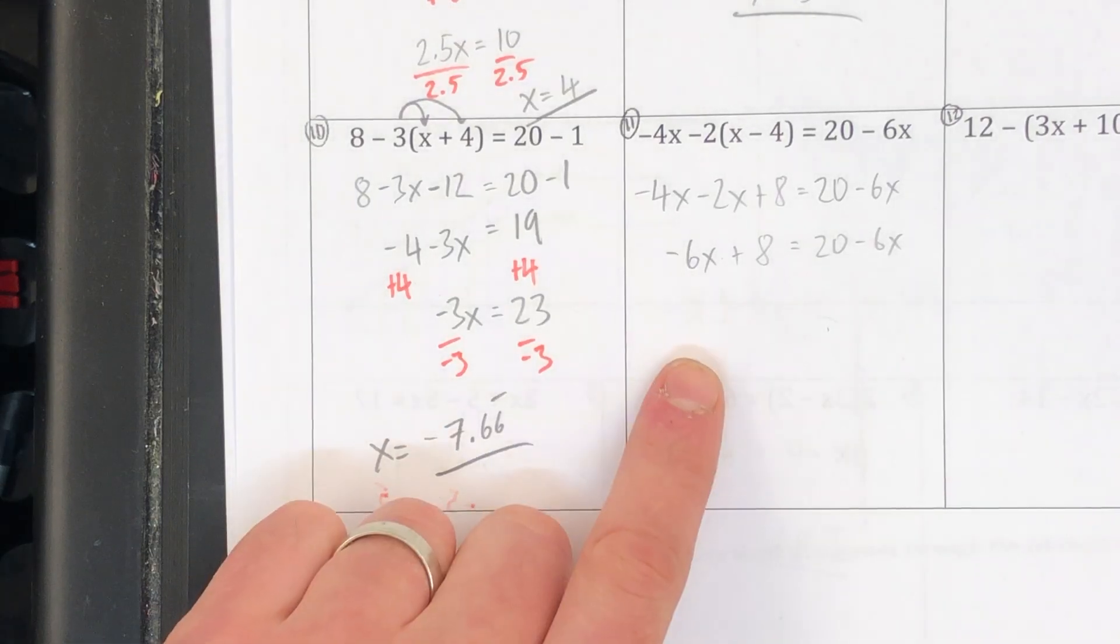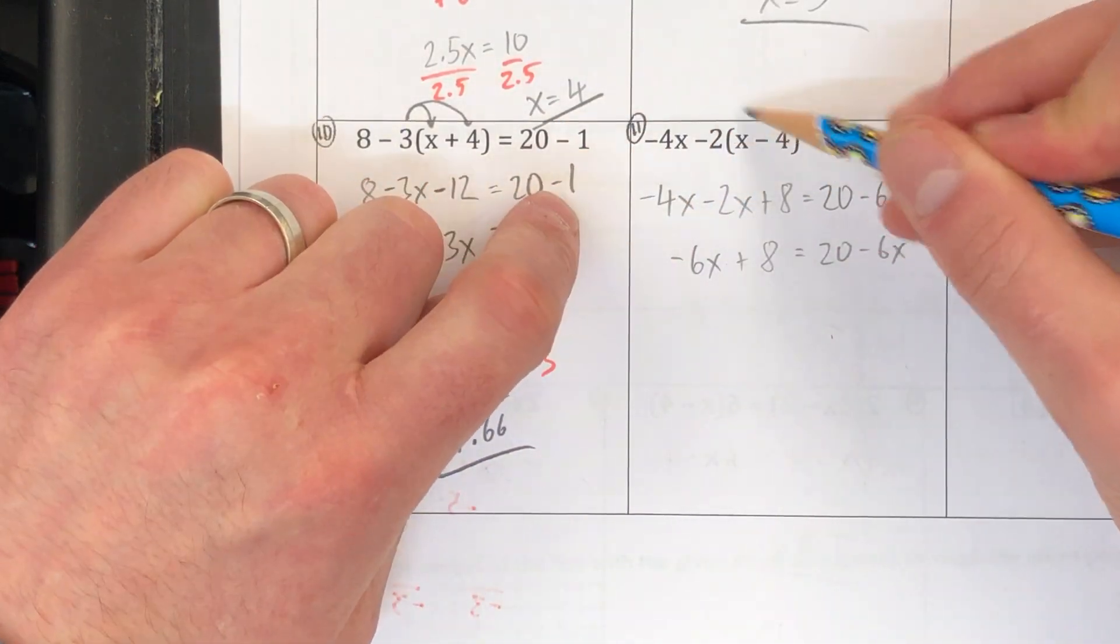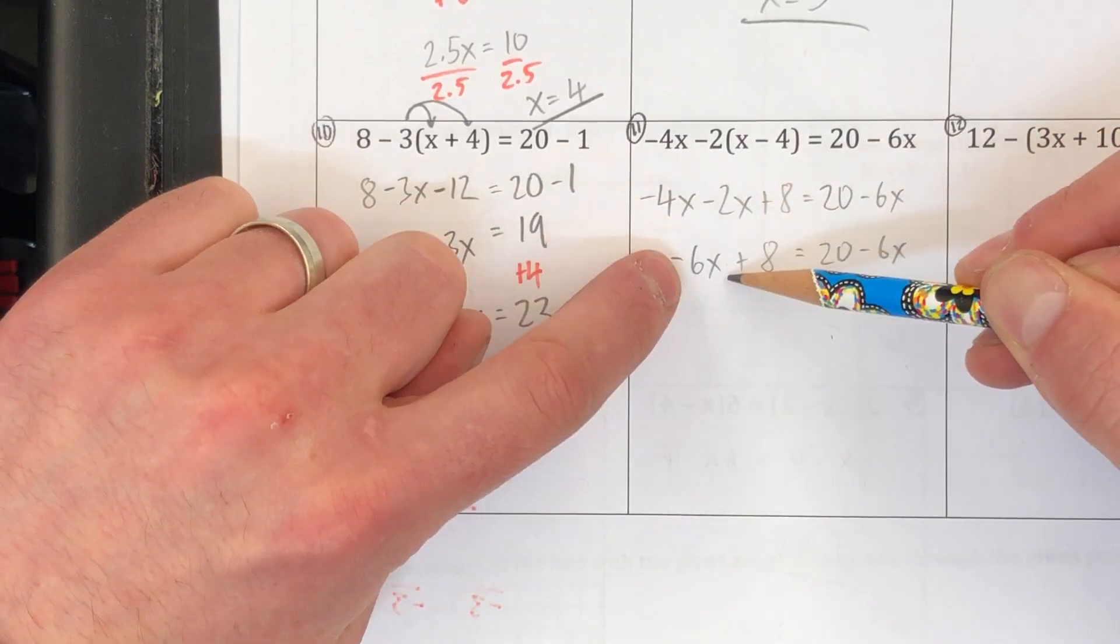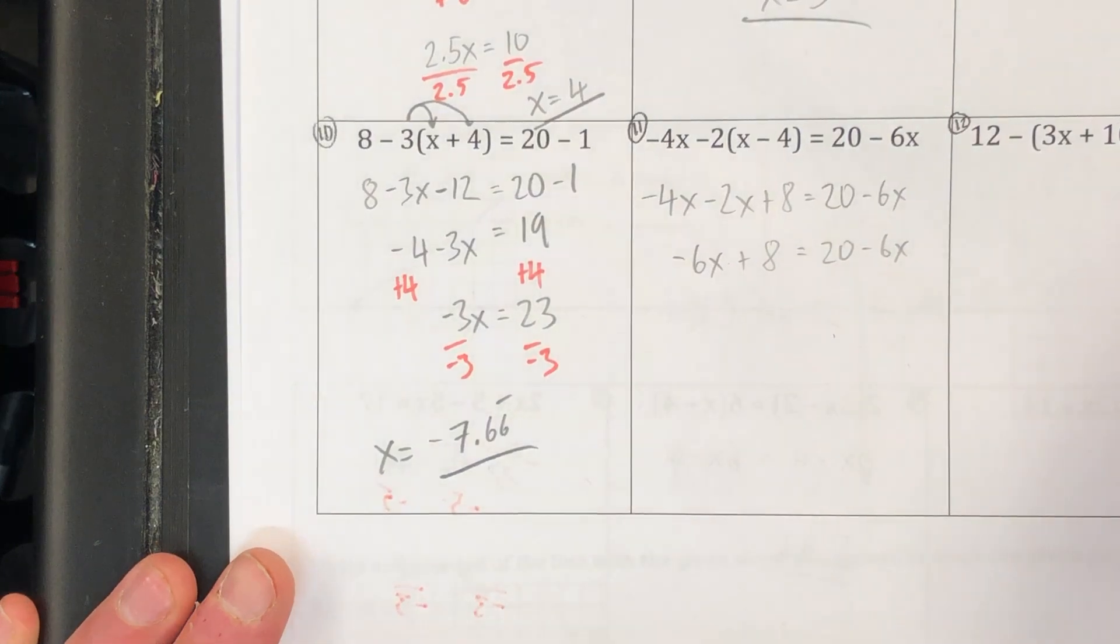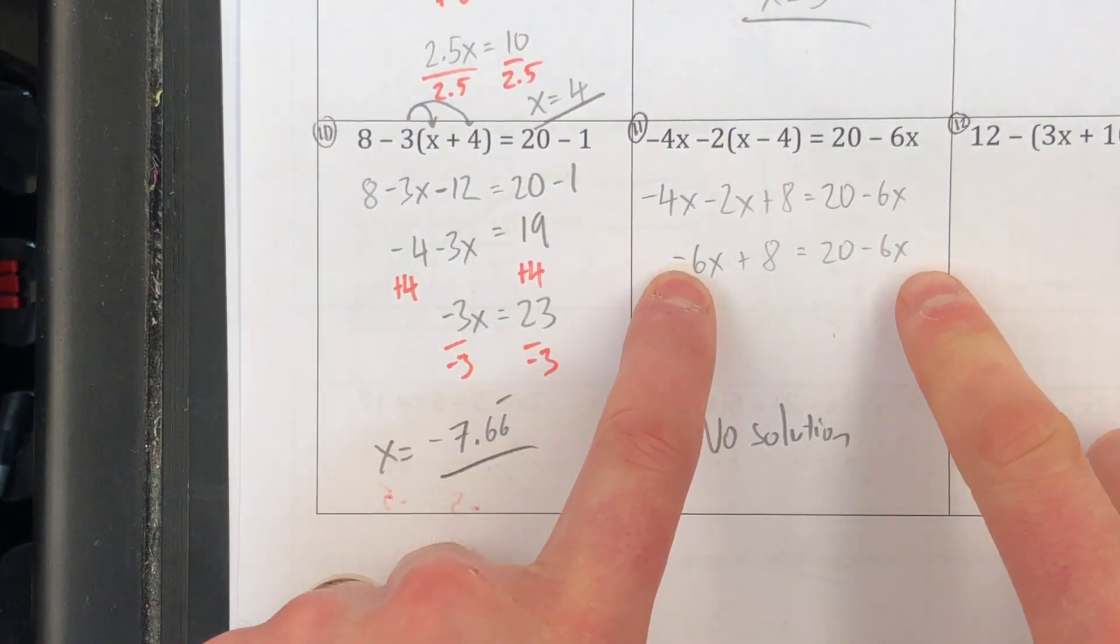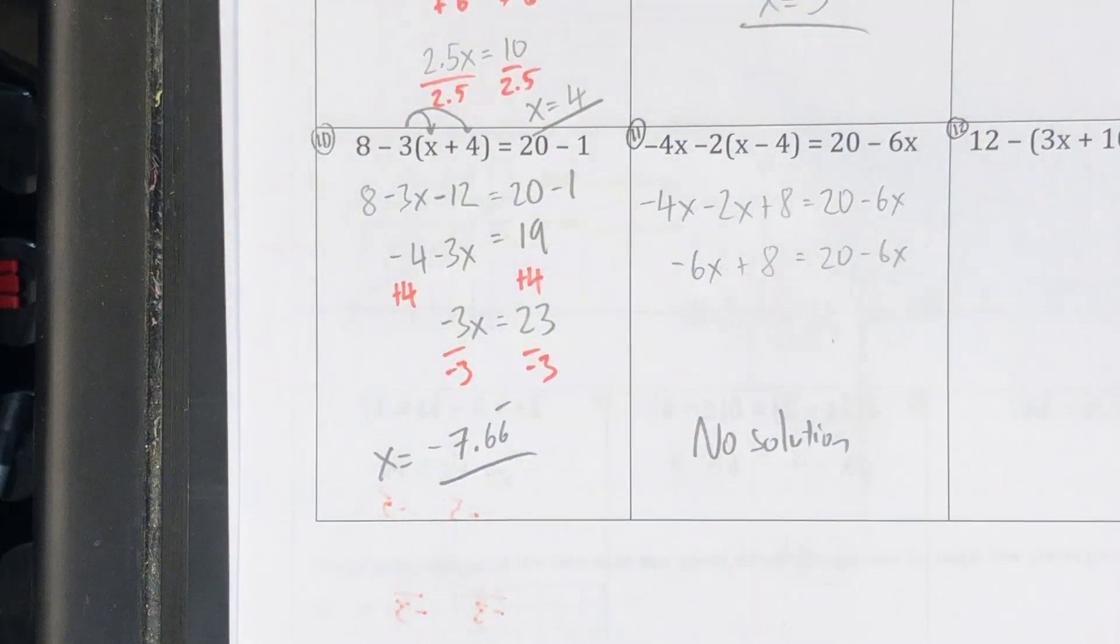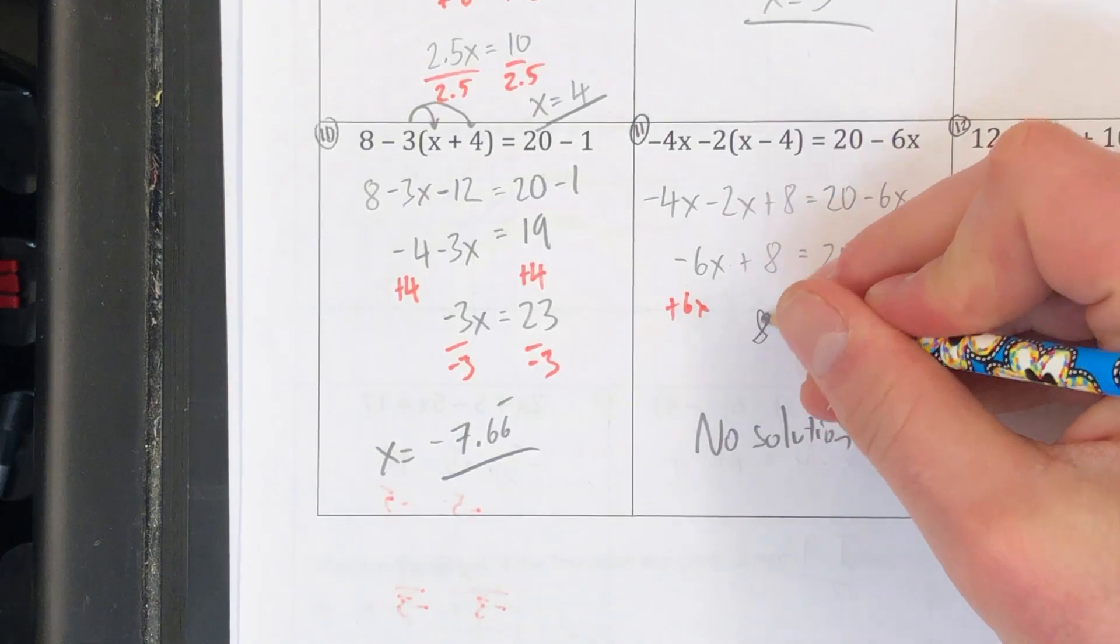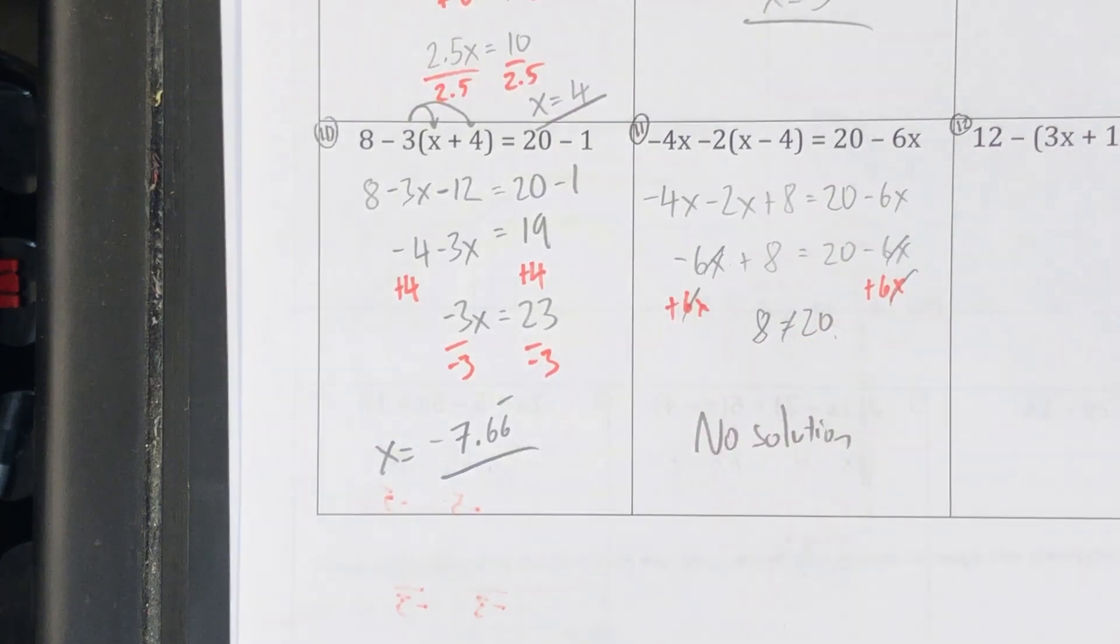All right, and then over here for 11 I started it for you. On the left side of my equation I had to use the distributive property again here. Then I'm combining the variable terms this time to get negative 6x. And then at this point I actually know right now that the answer to this is going to be a no solution because the variable terms are the same at negative 6x. The constant terms are different so I know it's no solution. But if I didn't notice that I would add 6x to both sides. And that leaves me with 8 is equal to 20 because this all cancels, which of course is false. So 8 is not 20, therefore no solution.